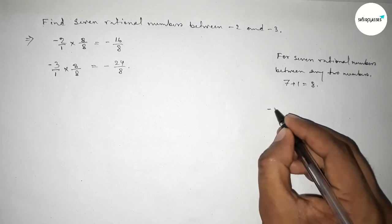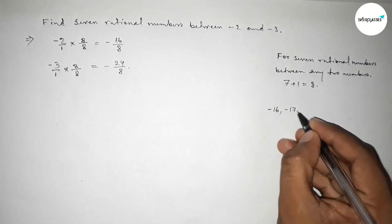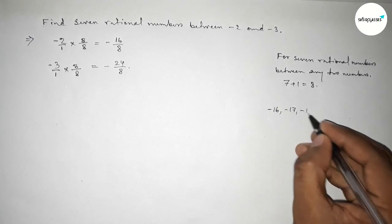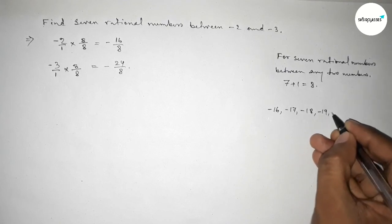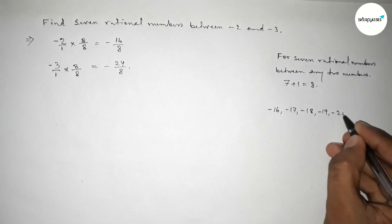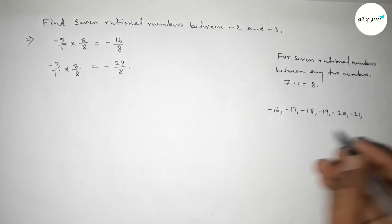Between minus 16 over 8 and minus 24 over 8, we can get 7 negative integers. So first, write down all the 7 negative integers.